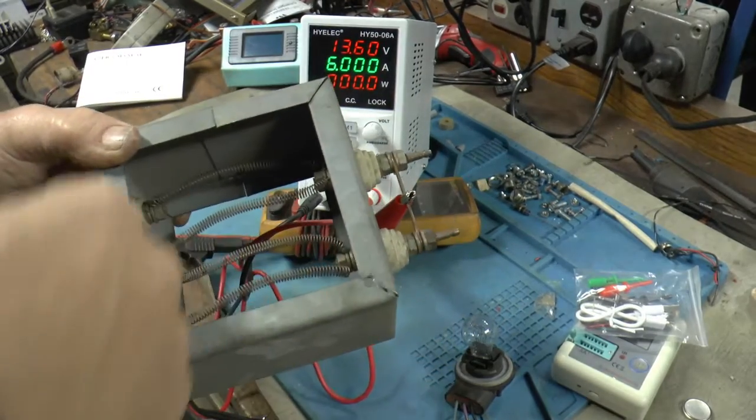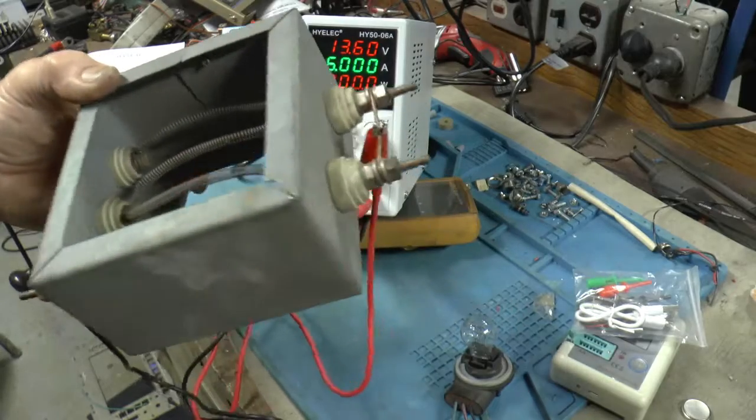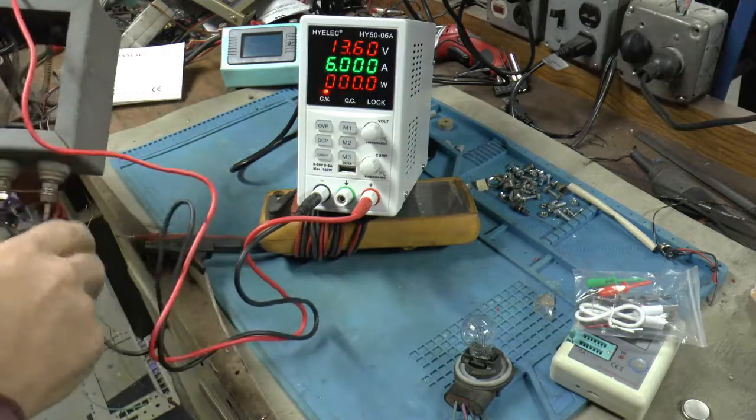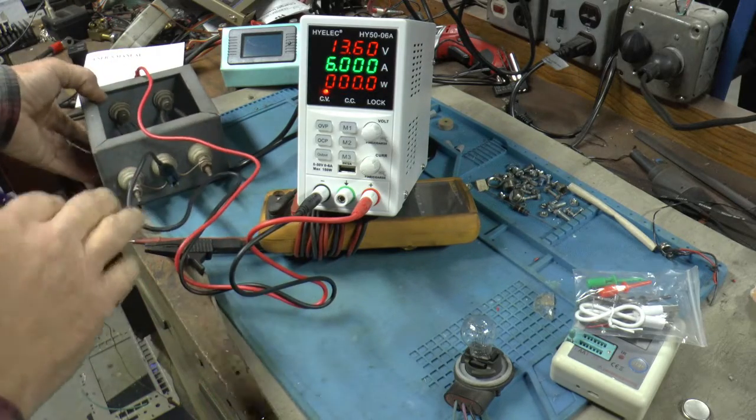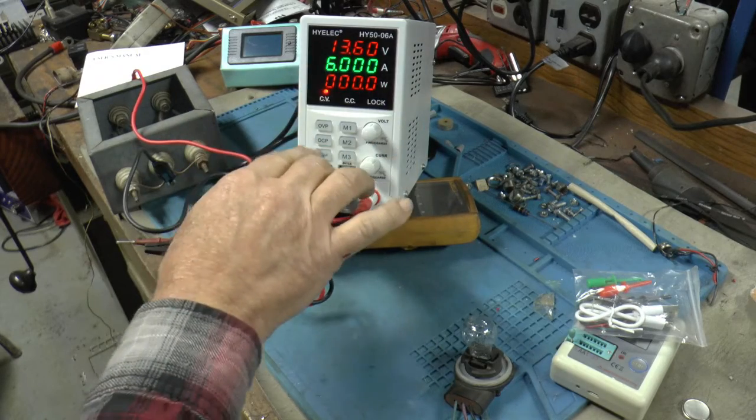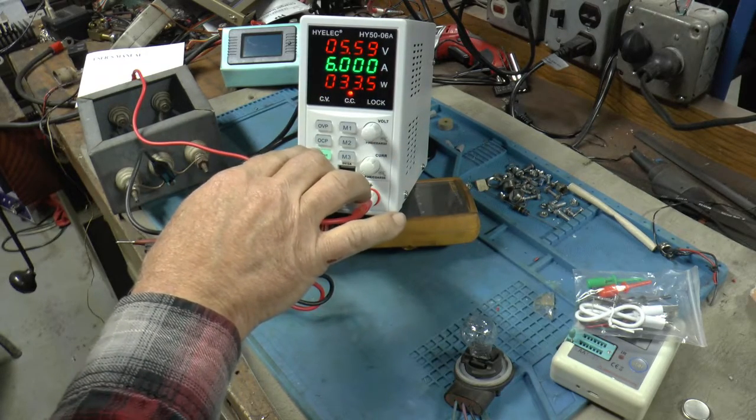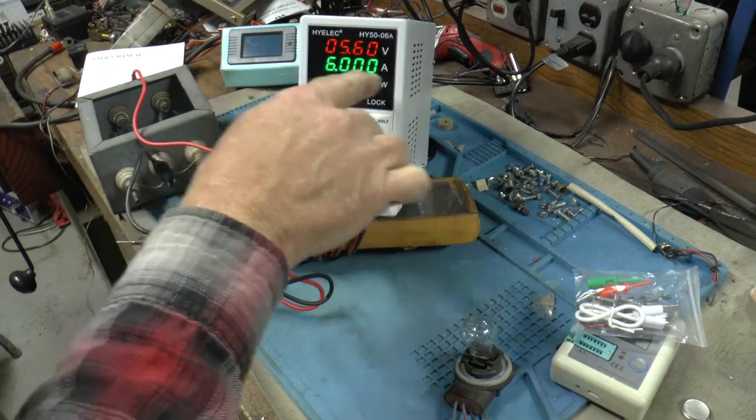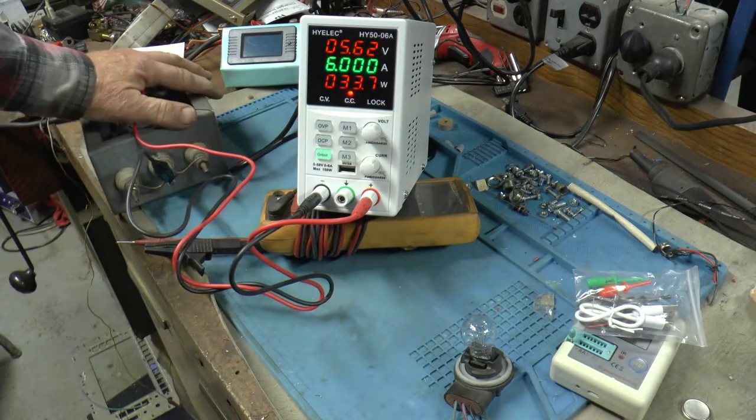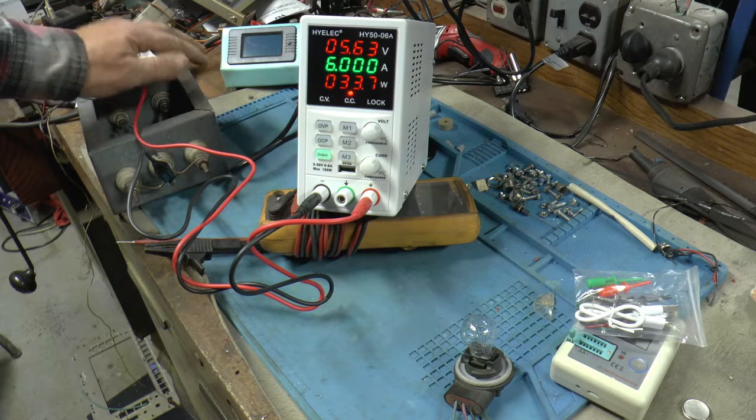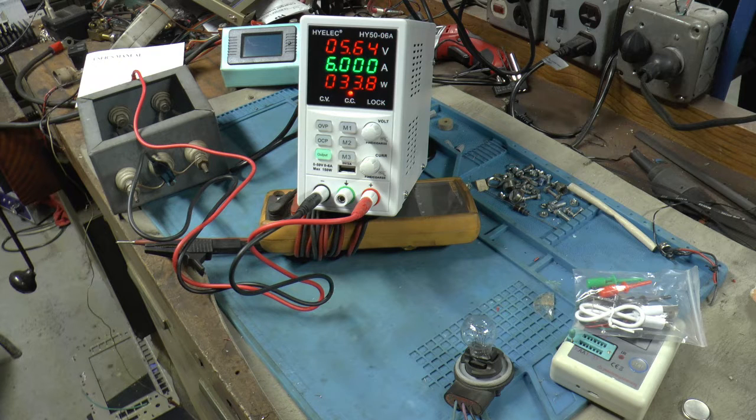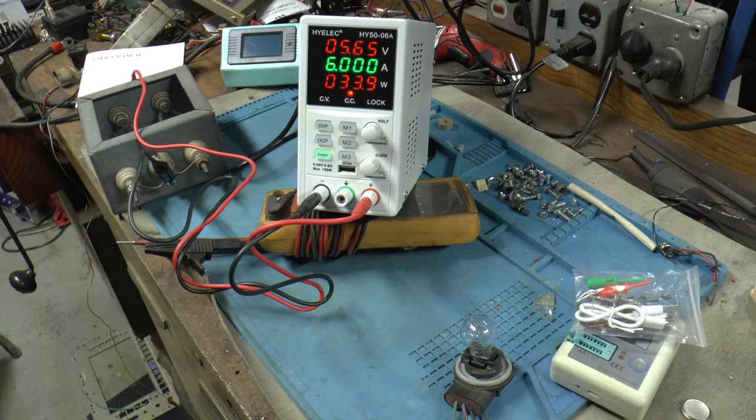So I got a little 12 volt heating element here that I use for running down stuff or load testing. I think it uses around 8 or 10 amps at 12 volts. So, got it set for maximum output. Okay. Does the 6 amps. We can only go at 5 volts, so it will do the 6 amps.